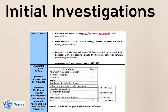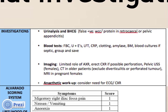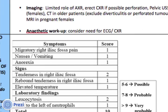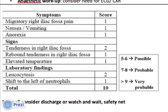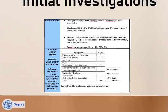For initial investigations, blood tests are listed on screen and urinalysis should be done. Imaging is discussed on the next slide. Findings from the history, examination, and initial investigations can be put into the Alvarado score to give you a likelihood of appendicitis in your particular patient.